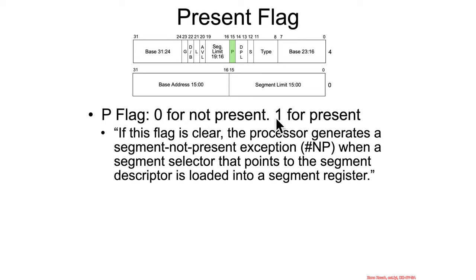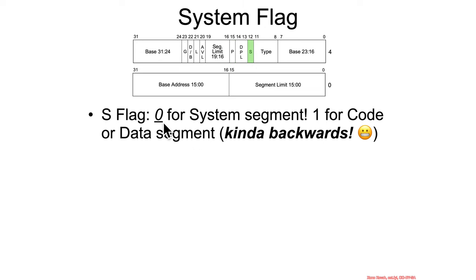There's a present flag: if zero, the entire descriptor is treated as not present and should not be interpreted or used. If it's one, it means someone did fill in this entry in the GDT or LDT, and it points at a valid segment. If the flag is clear and someone tries to access that segment, an exception is thrown. There's also the S flag, which is counterintuitive: zero means it's a system segment, and one means it's a code or data segment. This is so counterintuitive that a third-party WinDbg plugin made the mistake of assuming S equal to one was a system segment.